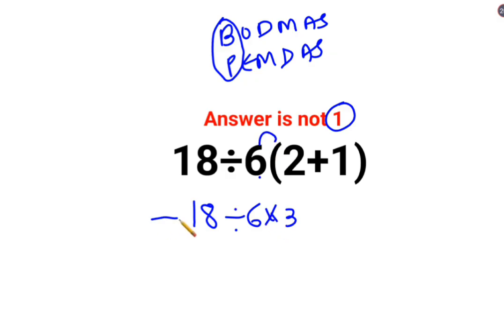At this step, a lot of people make a mistake. They keep 18 as it is, divide by 6 multiplied by 3 which is 18, and that is how they got the answer as 1. No, that is not how these things are supposed to be done.